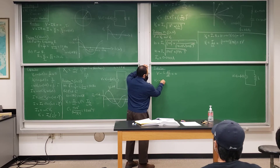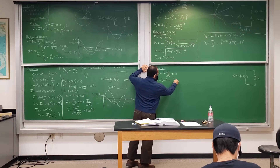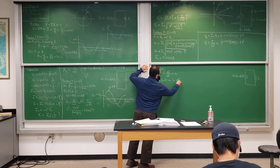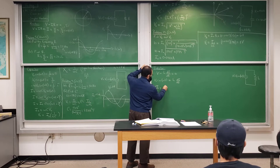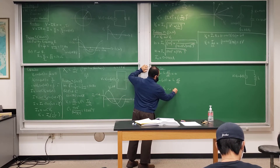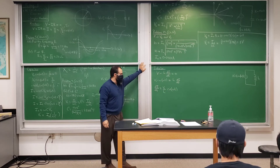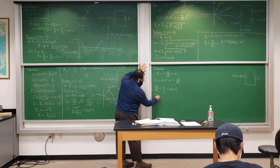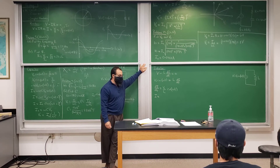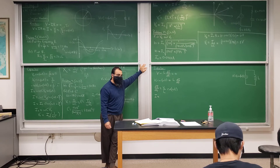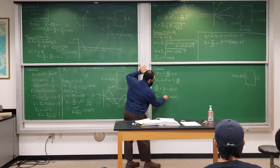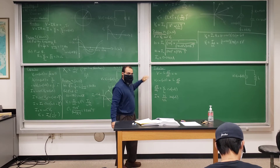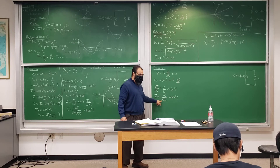So V0 cosine omega t equals L times di/dt. That means di/dt equals V0 over L times cosine omega t. To get i, we integrate, and we get V0 times 1 over omega L times sine omega t. So the maximum current I0 is V0 over omega L.